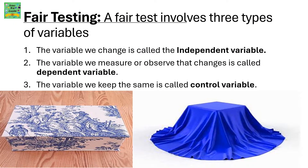Fair Testing. A fair test involves three types of variables. Firstly, the variable we change is called the independent variable. The variable we measure or observe that changes is called the dependent variable. The variable we keep the same is called the control variable.